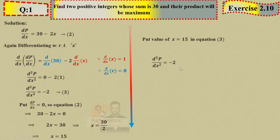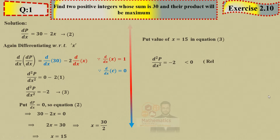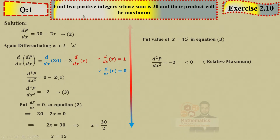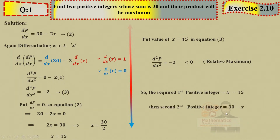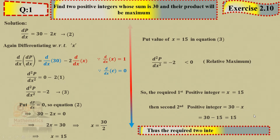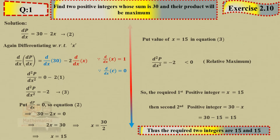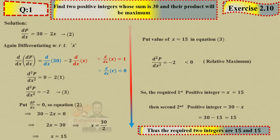So we get relative maximum — which is what the question asked: their product will be maximum. Now find both integers: first integer = x = 15. Second integer = 30 − x = 30 − 15 = 15. So both positive integers are 15 and 15. Check: 15 + 15 = 30 ✓ (the question said sum is 30). This was your first word problem.